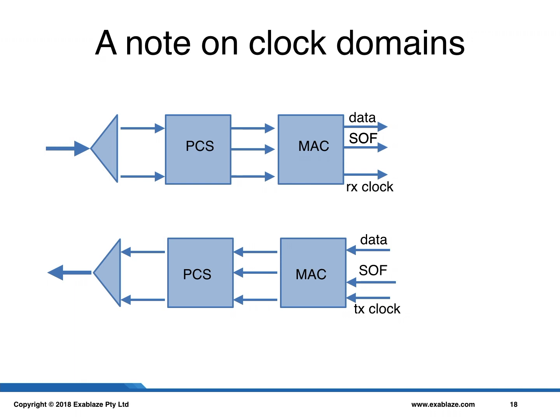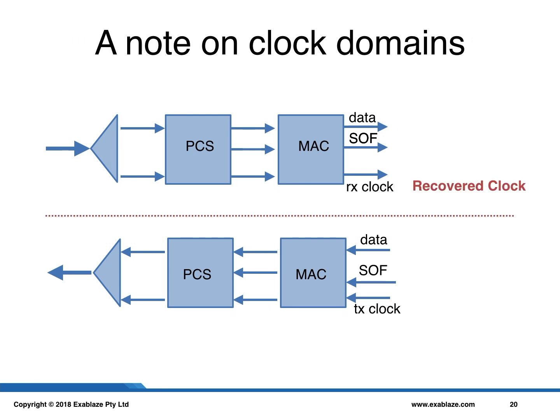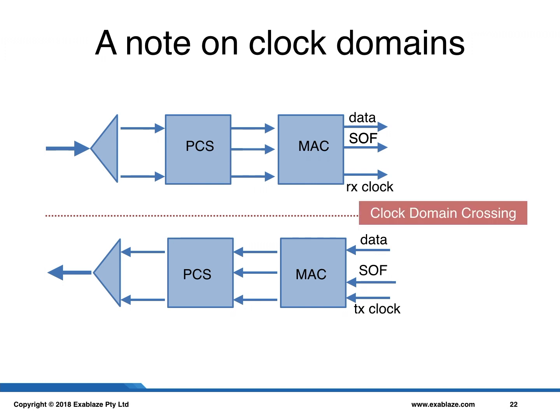Before we move on to other measurement methodologies, we need to consider clock domains. There are two different clock domains present in the system. The first is the recovered clock, provided by the receive side. The second is the transmit clock, which is generated locally. To move between these two clocks, we need a clock domain crossing, and it is important to keep these in mind as we look at further measurement options.